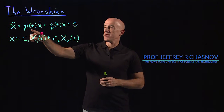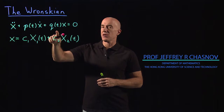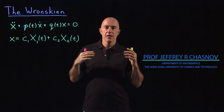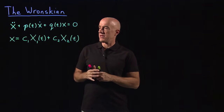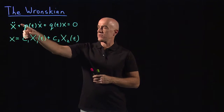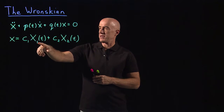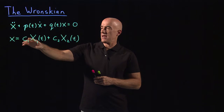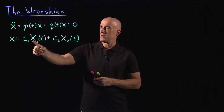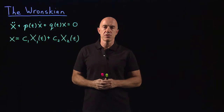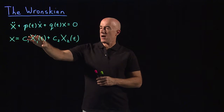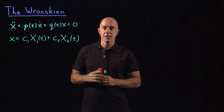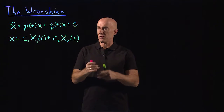We're trying to solve this second order linear homogeneous differential equation. We have the theoretical idea that if we found two solutions of this equation, X1(t) and X2(t), then the superposition of these two solutions is also a solution of the differential equation. We would like this superposition to be the general solution.